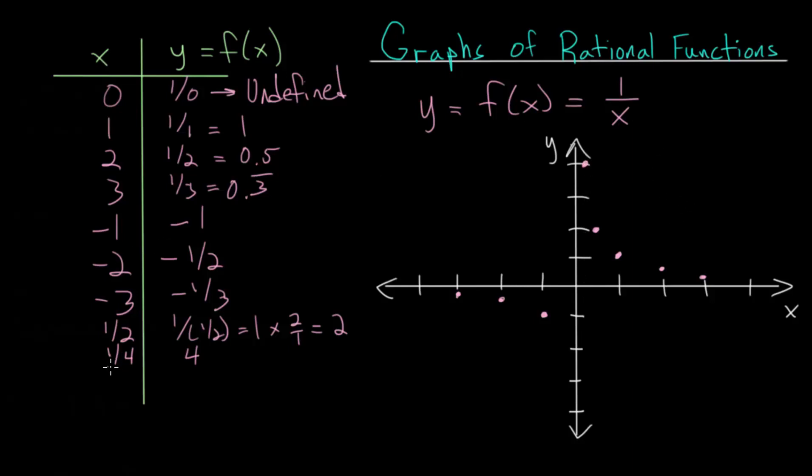What you'll notice, as you keep putting in smaller and smaller fractions, like let's say 1 over 100, 1 divided by a hundredth, or you could ask yourself, how many hundredths are there in 1? There would be 100 of them. So that would be way up off the top of the screen there. As you put in tinier and tinier x values, the y value gets bigger and bigger.